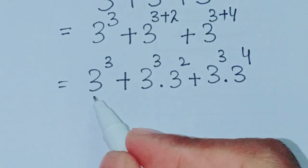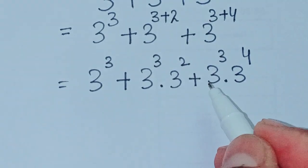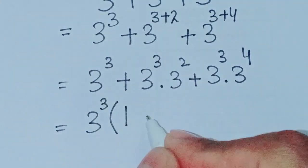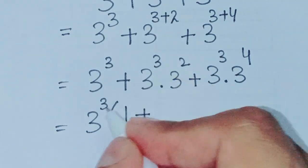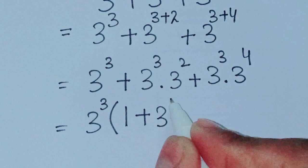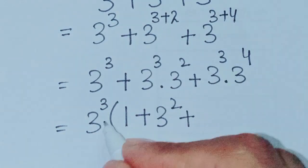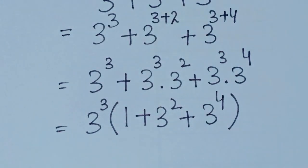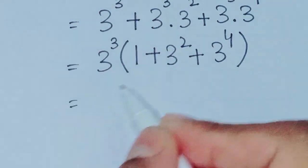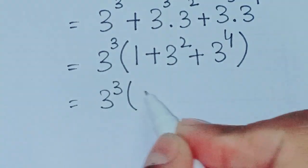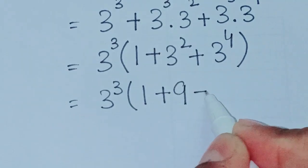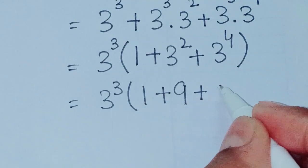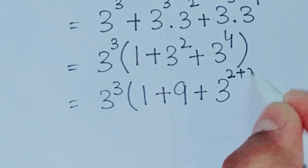Now we take 3 power 3 as a common factor. So it will remain 1 plus 3 square plus 3 power 4. That gives us 3 power 3 into 1 plus 3 square, which is 9, and 3 power 4 which we can write as 3 power 2 plus 2.